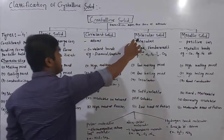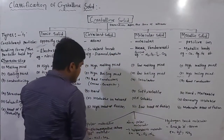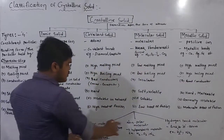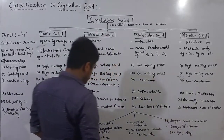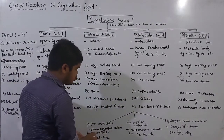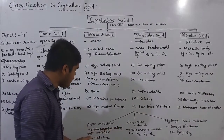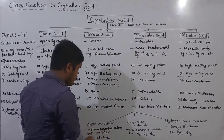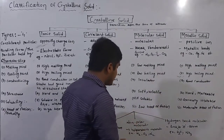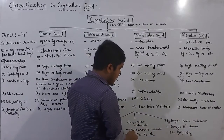Molecular solid is basically divided into three parts: polar molecules, non-polar molecules, and hydrogen bond molecules. Polar molecules have electronegative atoms between the molecules — for example, HCl and SO2. Non-polar molecules have independent constituent particles — for example, H2, O2, N2.